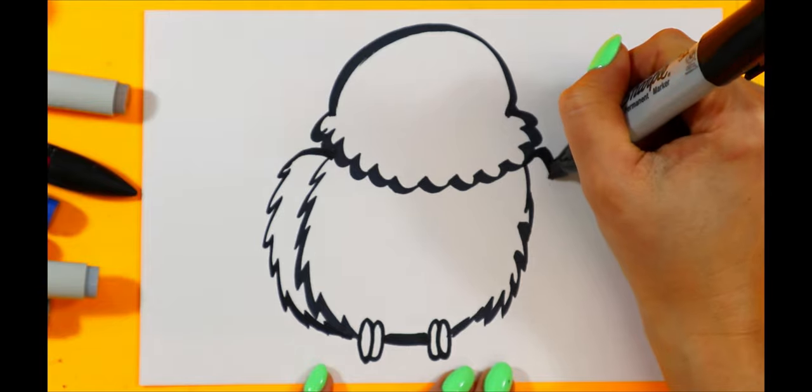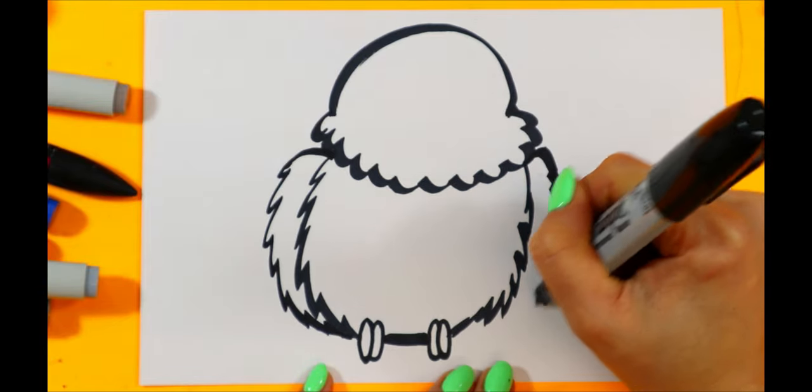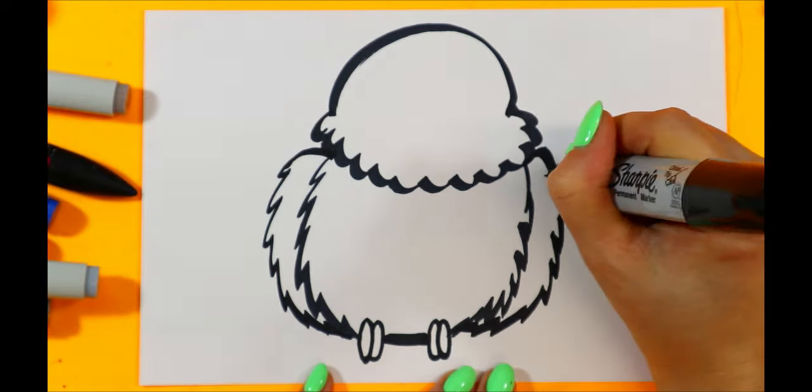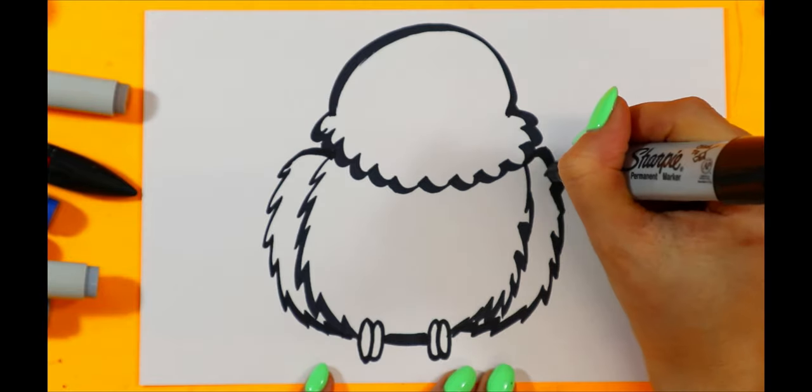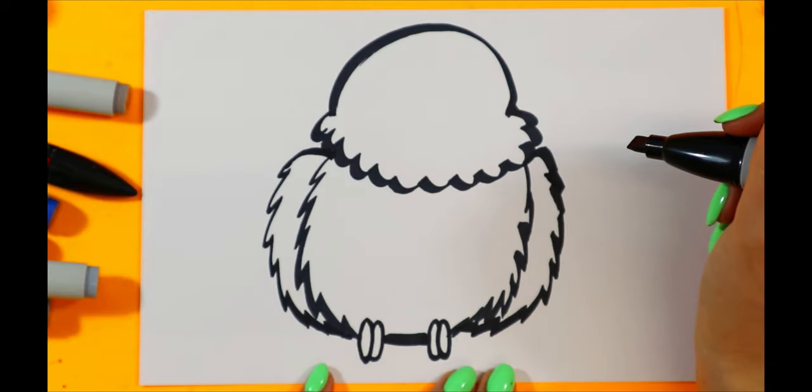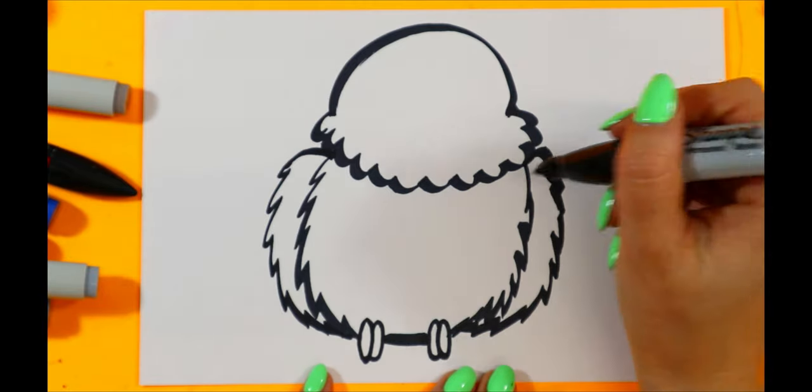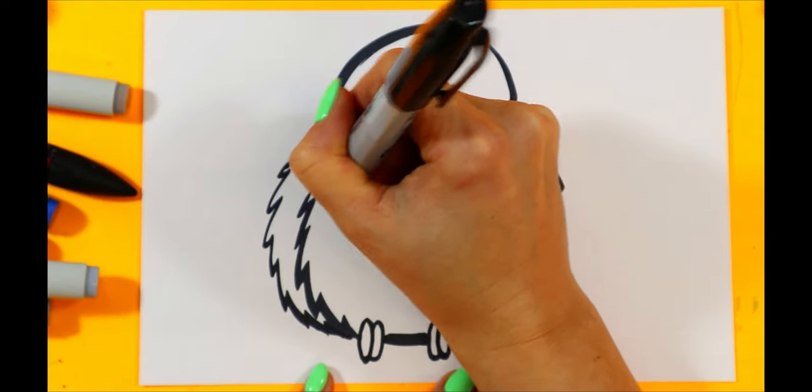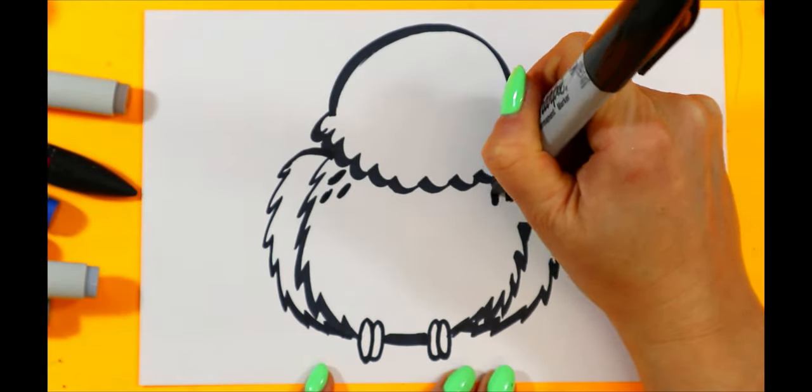Let's add some wings. We're going to curve up. Let's add some little oval dots here and there.